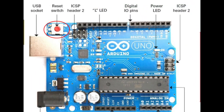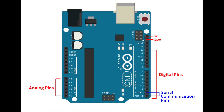Next pin is called analog pins. As the name indicates, the pins A0 to A5 are used as analog input and it is in the range of 0 to 5V. Next pin is digital pin. The pins 0 to 13 are used as a digital pin, input or output for the Arduino board.